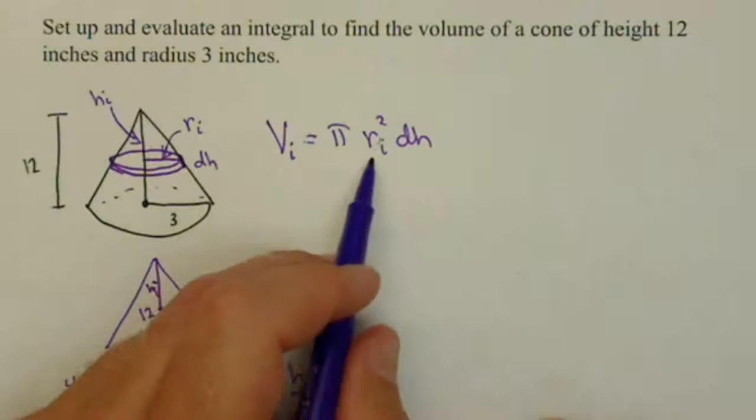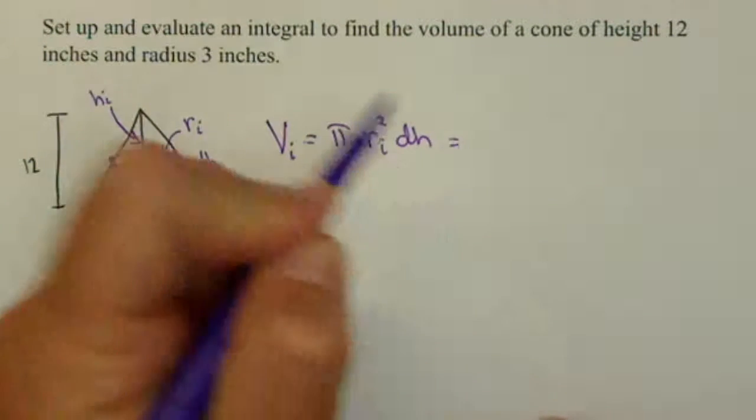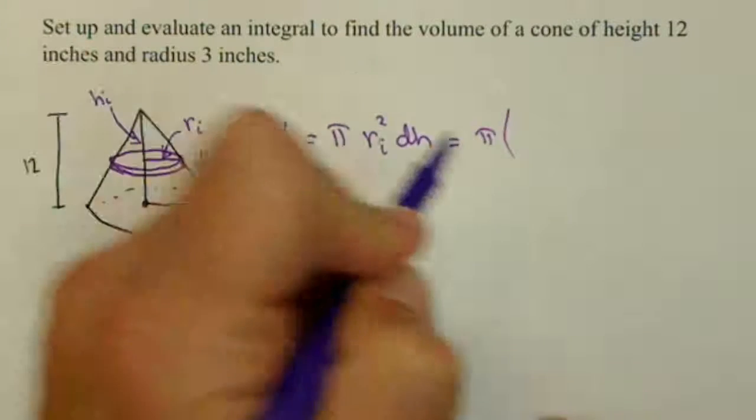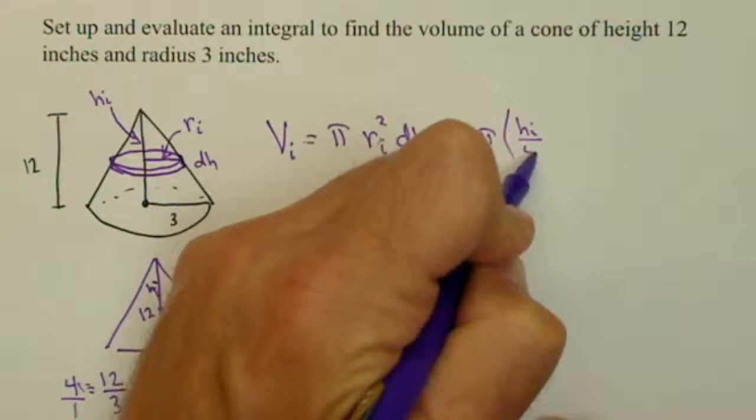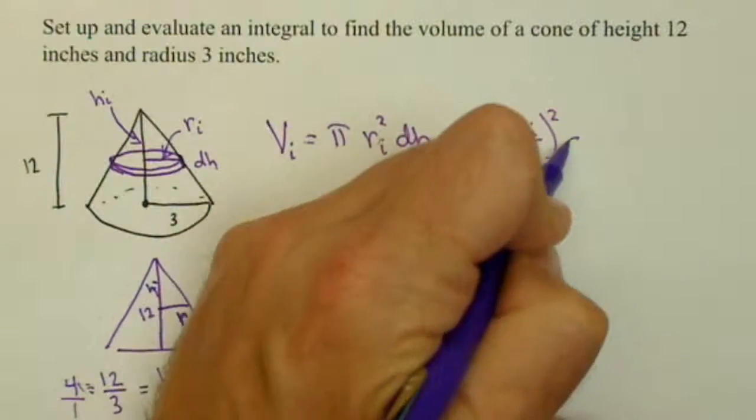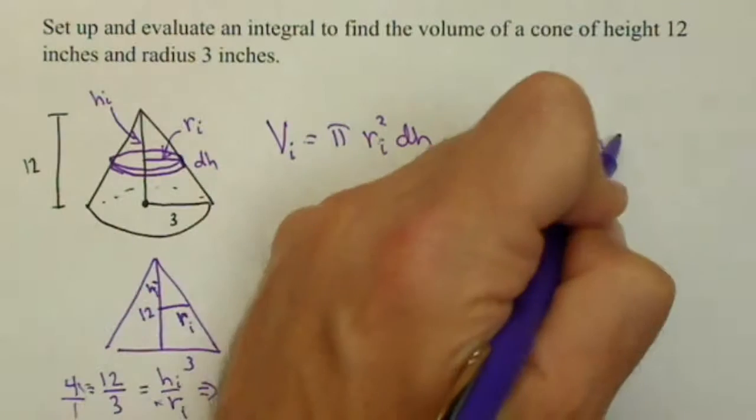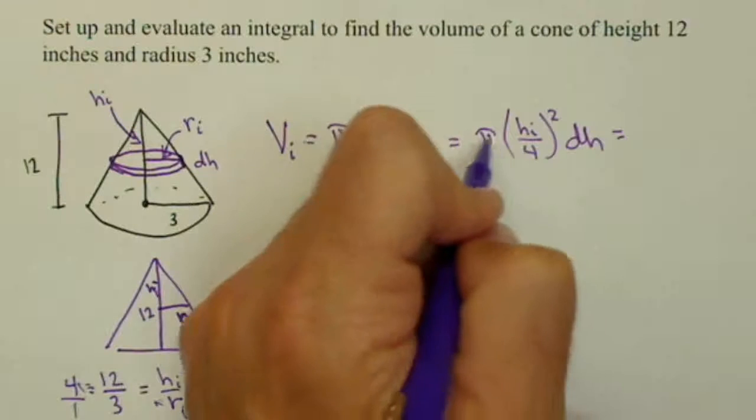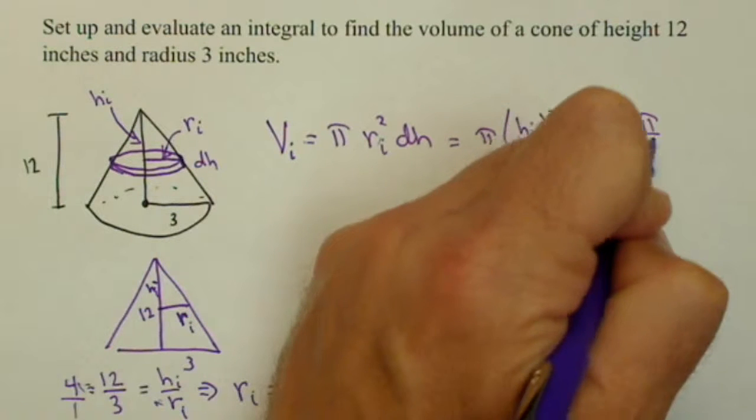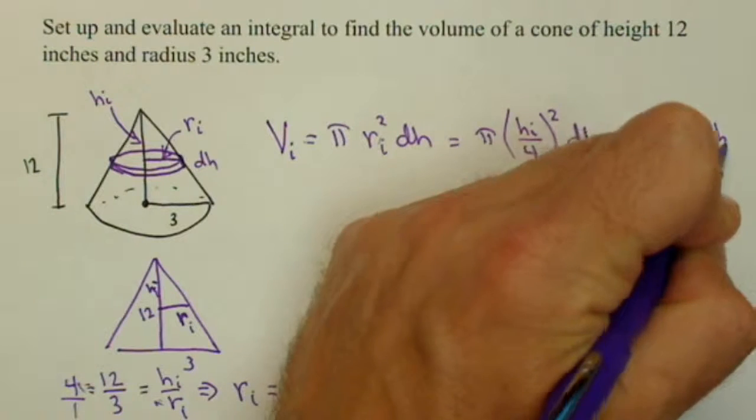So, that's what I'm going to substitute in here. So, pi, H sub i over 4, the quantity squared, dH, and let's do one more step of simplifying. We square this, we're going to get pi over 16, H sub i squared, dH.